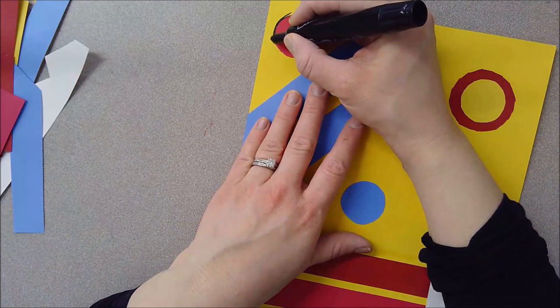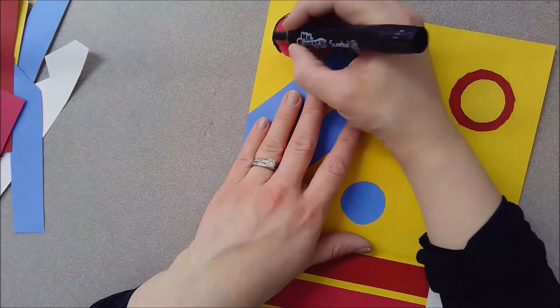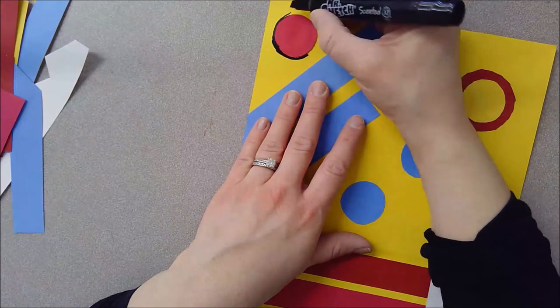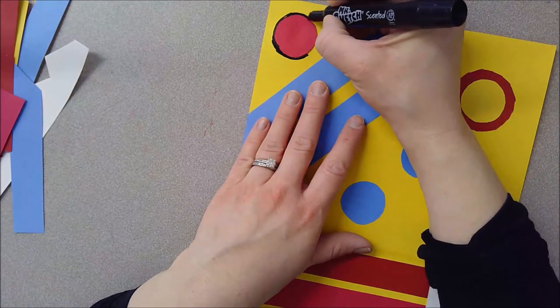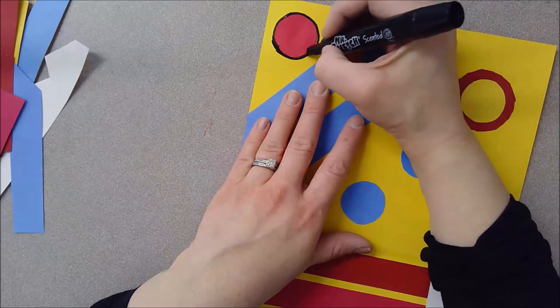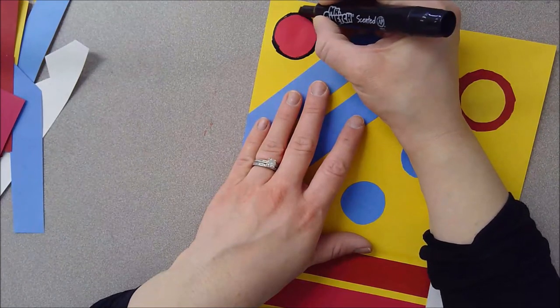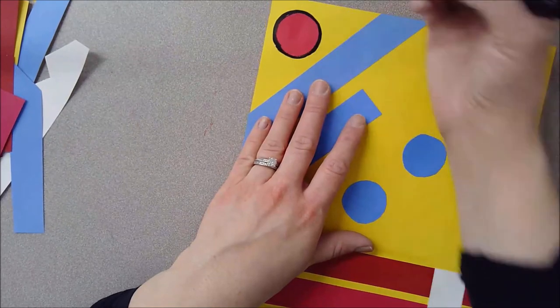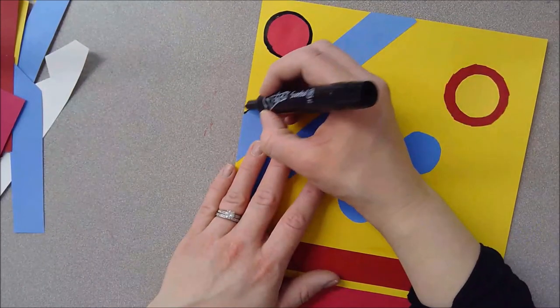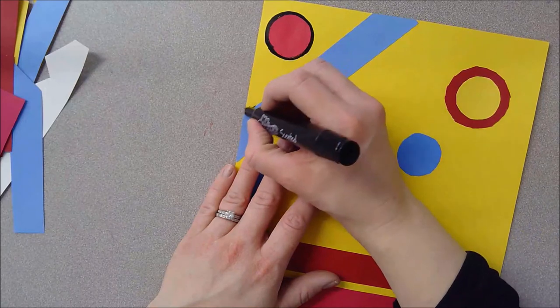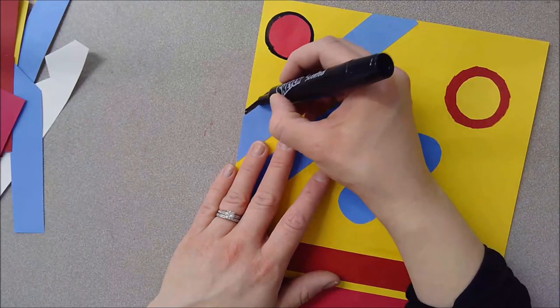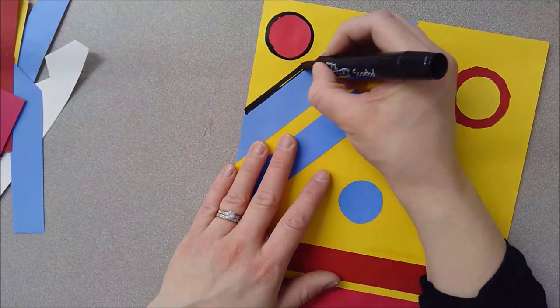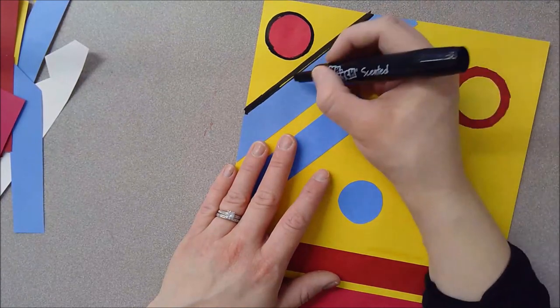So when you trace, you want to make sure you can feel the edge of the paper of whatever you're tracing around. Don't want to have a big gap in between them. You want to make sure nice and close to it so that you create a nice thick black line around it. And you're going to do this for everything that you have and always try to create a nice thick outline. So you don't want to have a gap in between. If you do, you just need to go back over it again so that you don't see that gap.